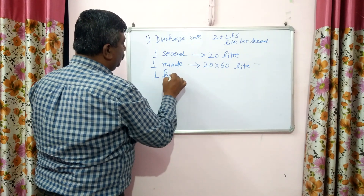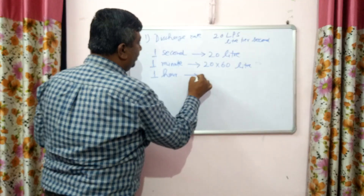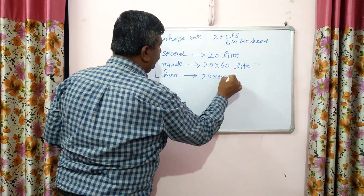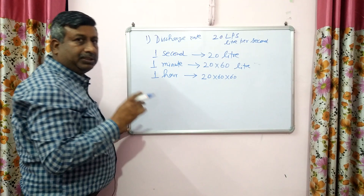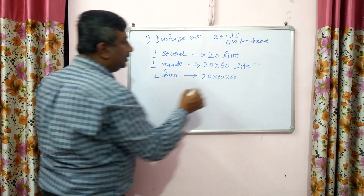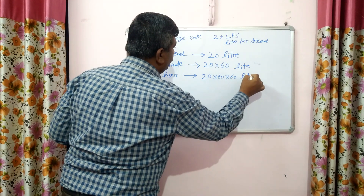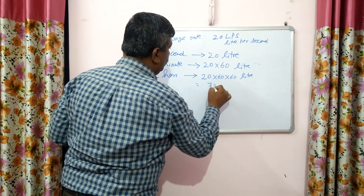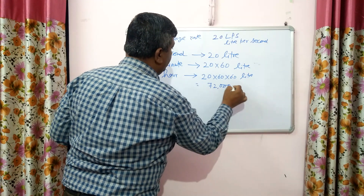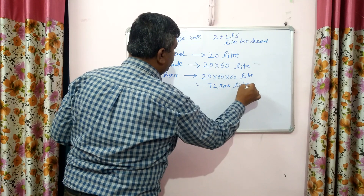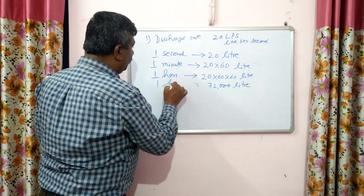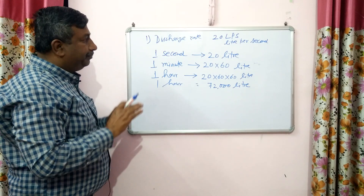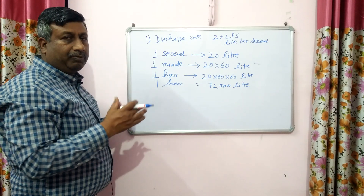Then calculate the volume of water in 1 hour: it is 20 × 60 × 60, because there are 60 minutes in 1 hour. So it is 72,000 litres of water — this is the amount of water in 1 hour.